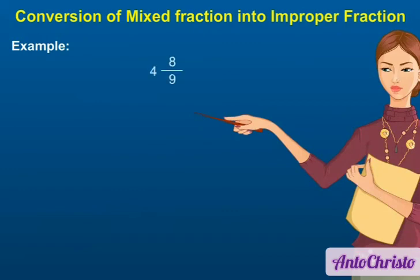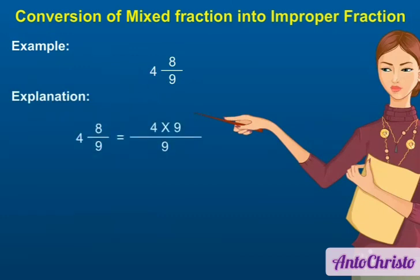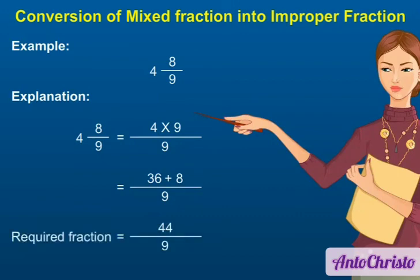Example: Express 4 and 8/9 as an improper fraction. Explanation: Step 1: Multiply 4 and 9 to get 36. Step 2: Add 8 to 36 to get 44. Step 3: The required fraction is 44/9.